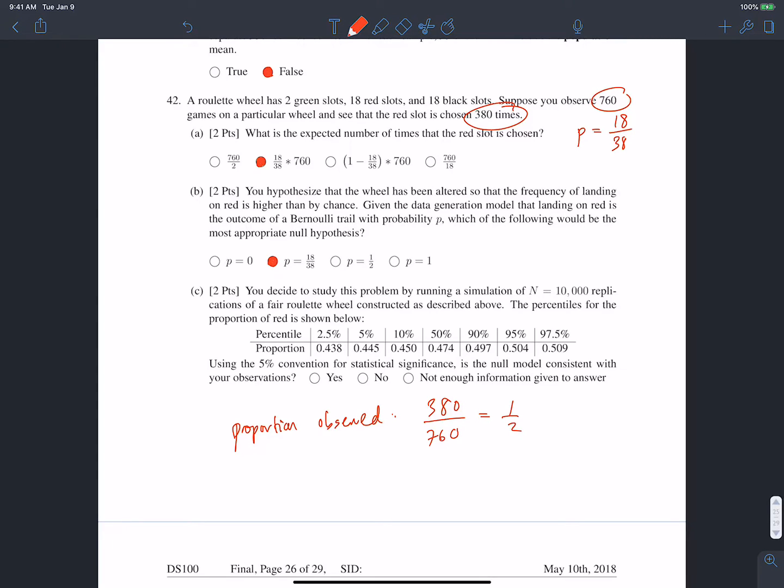Now we need to find the p-value of the test statistic 1 half, right? And it turns out the p-value, or sorry, the 95th percentile of proportions was 0.504. And since our observed is slightly less than that, our observed is probably somewhere between 90 and 95% in terms of percentile, our observed proportion is not in the 5% of most extreme test statistics under the assumption that the null hypothesis is true. So we don't have enough evidence to reject the null hypothesis, because the probability of observing the test statistic of 1 half is more than 5% under the assumption that the null is true. So is the null model consistent with our observations? Here we'd say yes. We don't have enough evidence to reject the null.